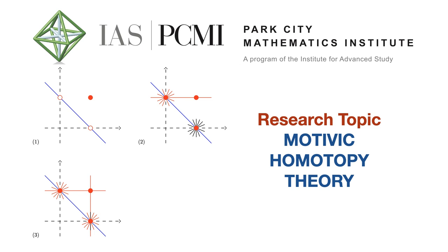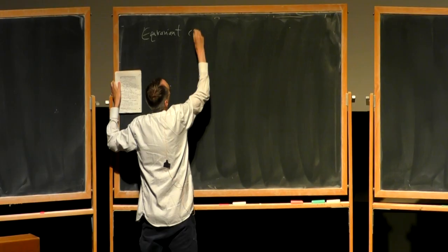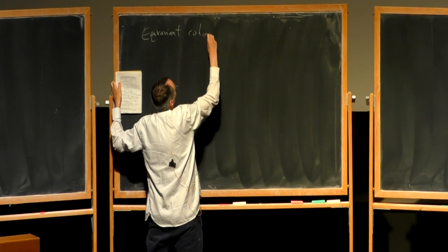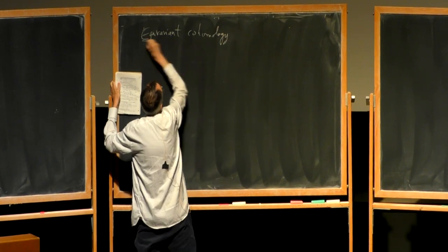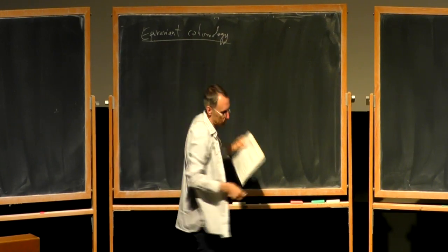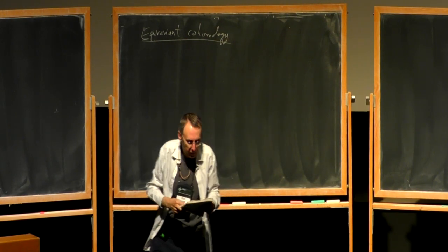Today we'll describe equivariant Chow groups. Maybe I should start with equivariant cohomology, which is related to the cohomology of classifying spaces.